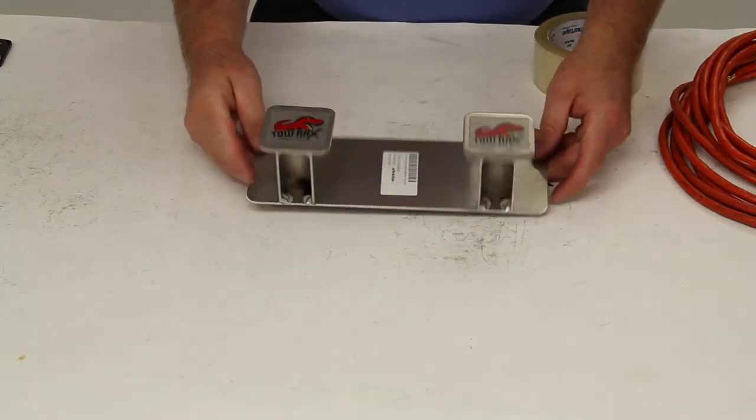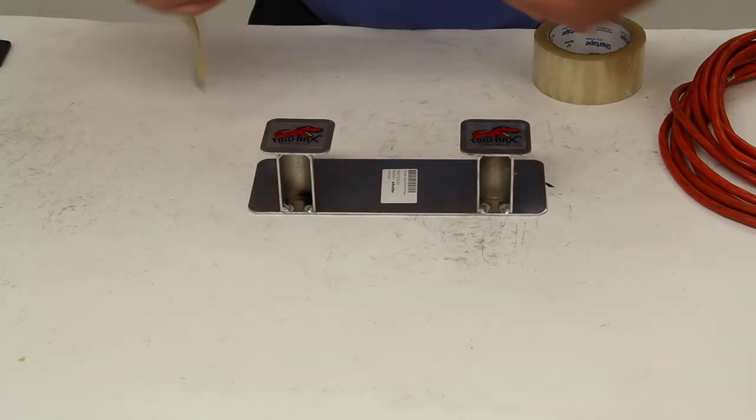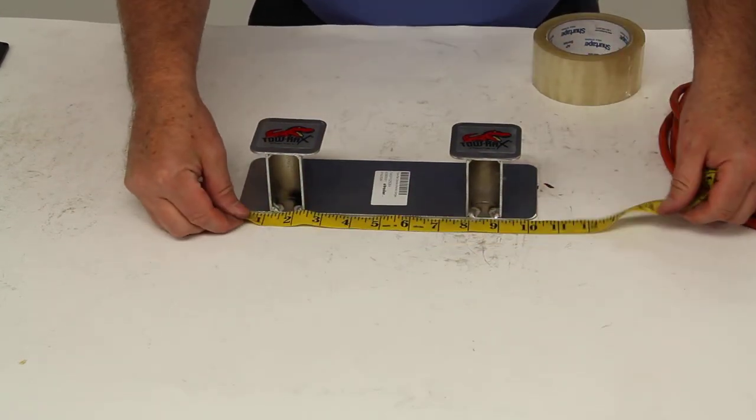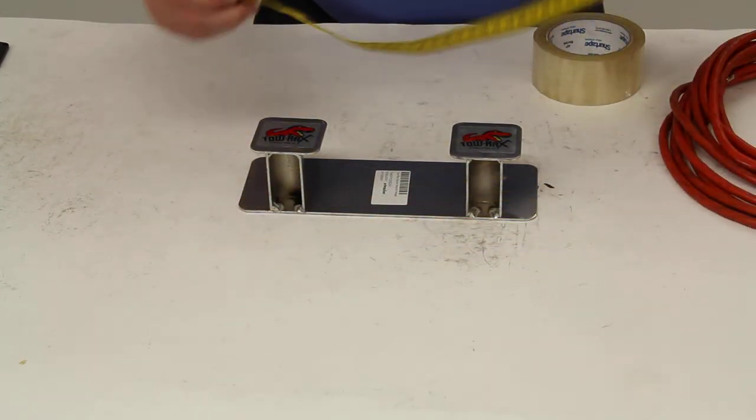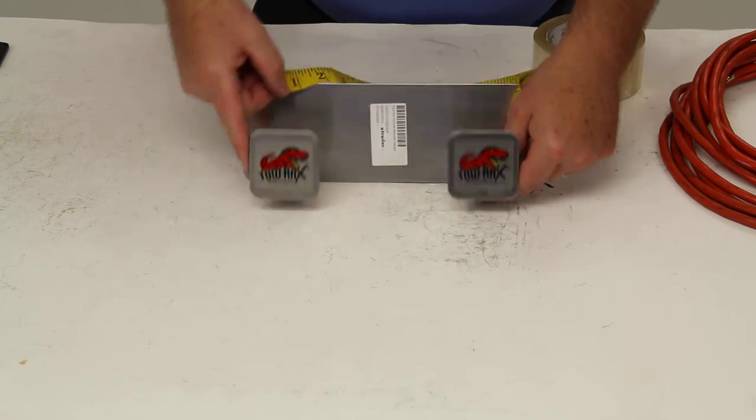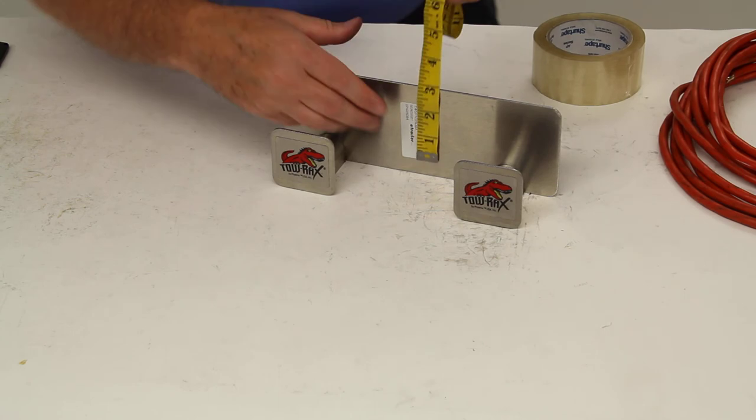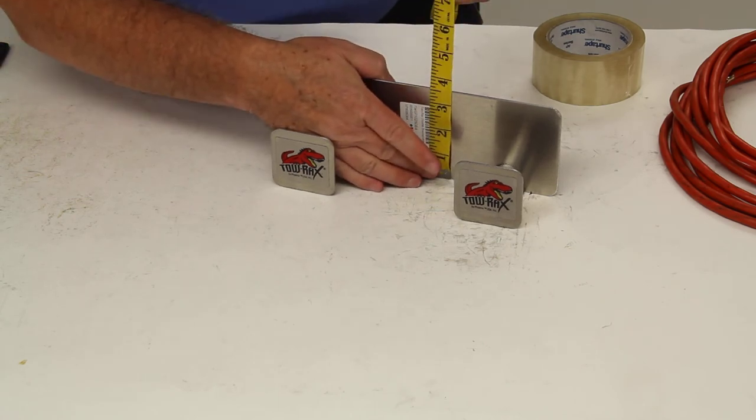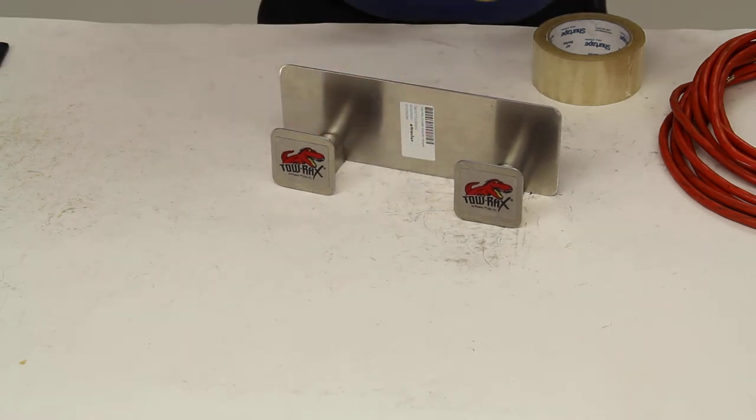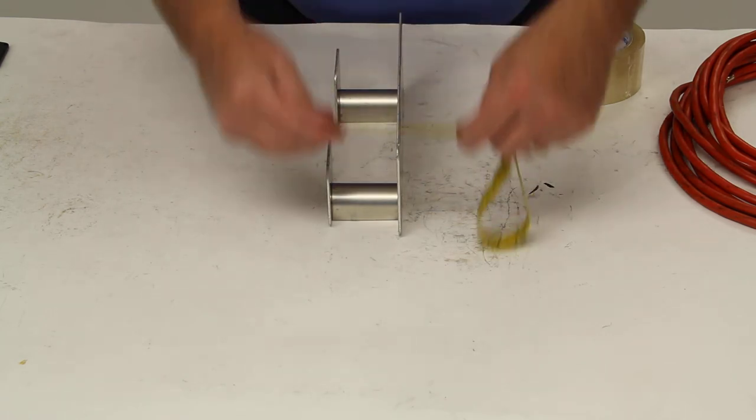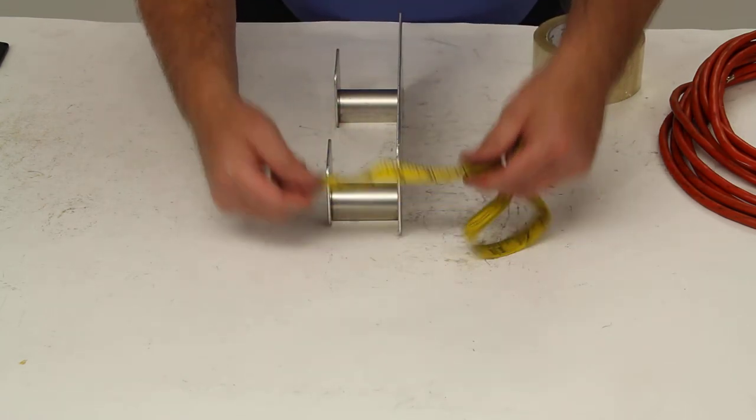A few dimensions on this. The length on this bracket will be ten and a quarter inches. The overall height will be three and a half inches. And the depth on it is two and a half inches.